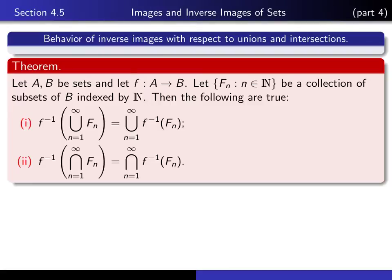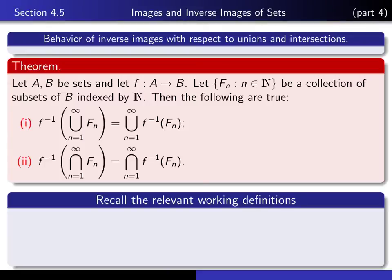In the balance of this lecture, we're going to write the proof of part one, and I'm going to leave the second one as an exercise for you. In order to do it, we need to recall two things: the working definition of the inverse image of a set, and the working definition of a countable or denumerable union of sets.